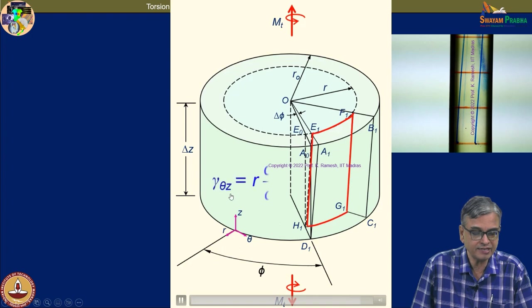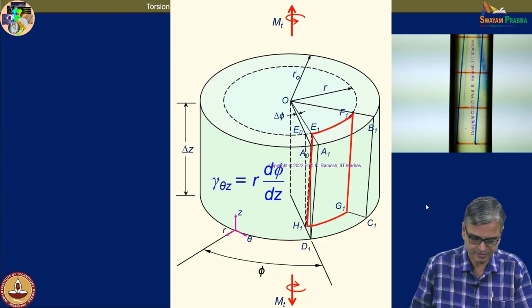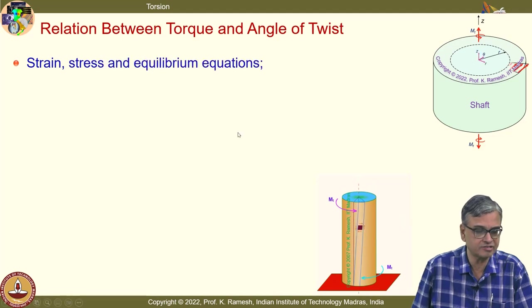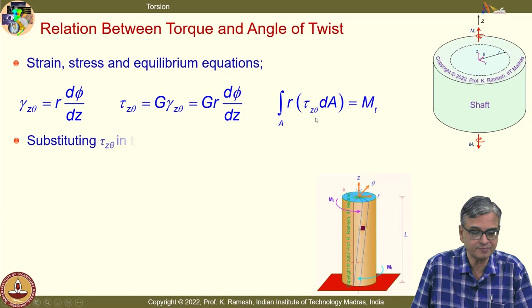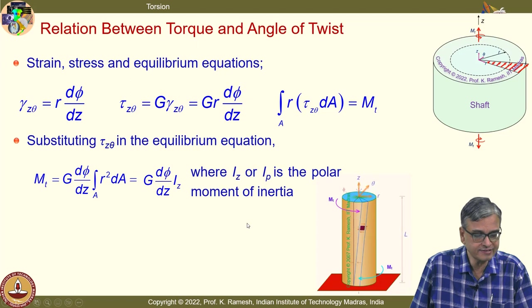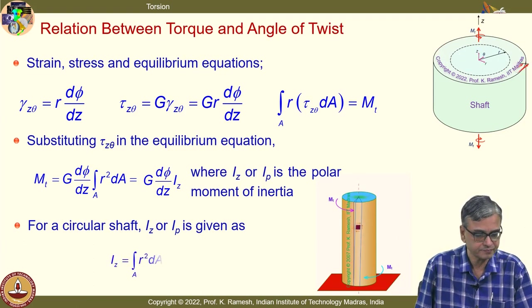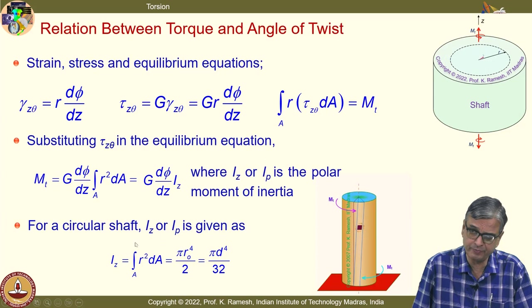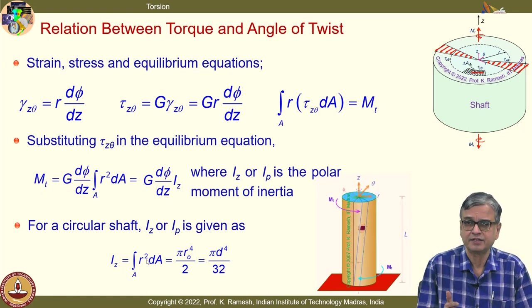We used this to develop the stresses, strain, and equilibrium equations. In the process, we identified a quantity that when substituted gives ∫R² dA — the polar moment of inertia. We developed it for a circular shaft and extended the same ideas to a hollow shaft. It is better to use I_p for a circular shaft when doing torsion, and I_z (or simply I) when going for bending of beams.